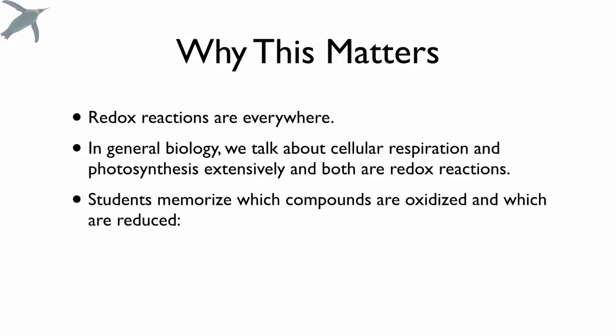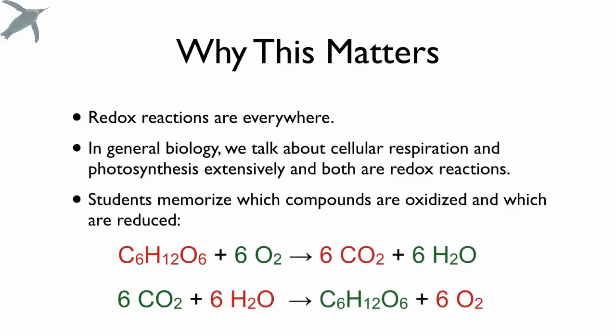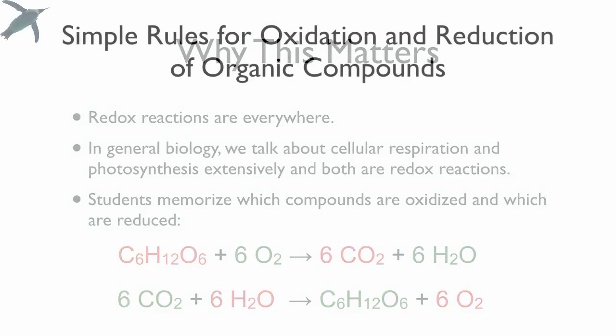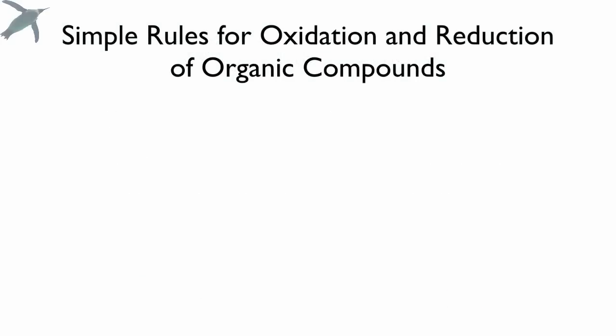Your textbooks will generally have color-coded equations for respiration and photosynthesis — like this is supposed to help somehow — and you're just supposed to know that glucose is being oxidized to carbon dioxide while oxygen is being reduced to water. And don't those colors just help you so much? No. So we're going to do it Penguin Prof style.